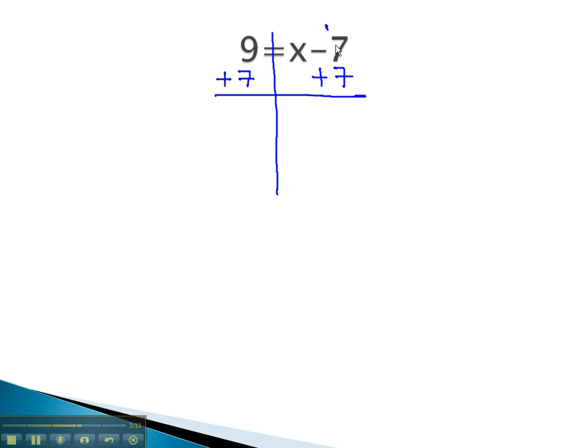Notice, the negative 7 plus 7 subtracts out to 0. We now have 9 plus 7, or 16, equals x. This is the number that x represents in this equation.